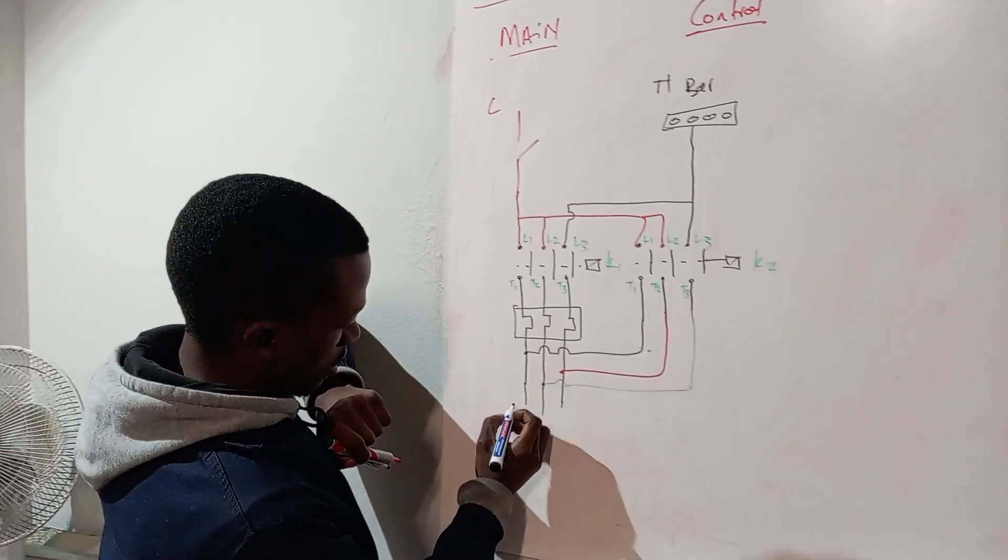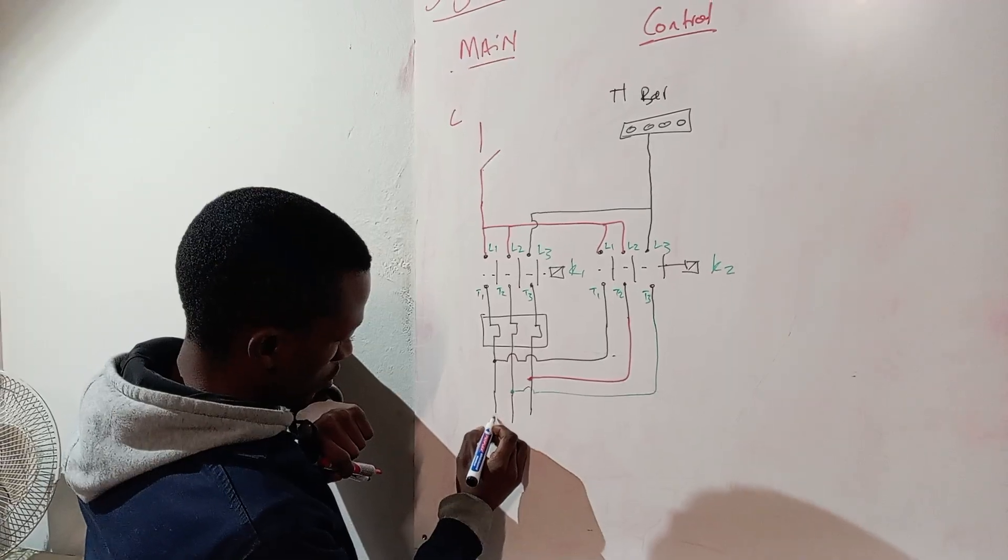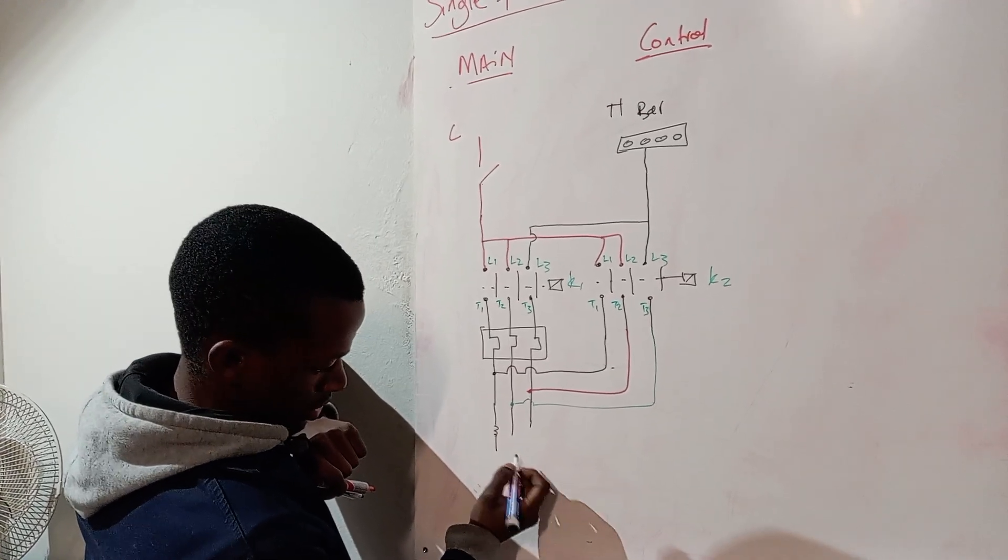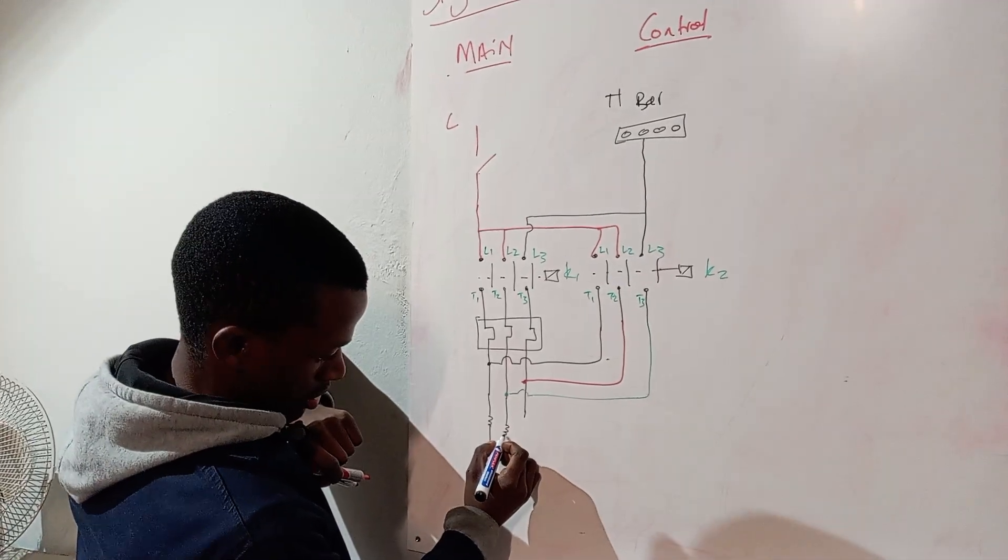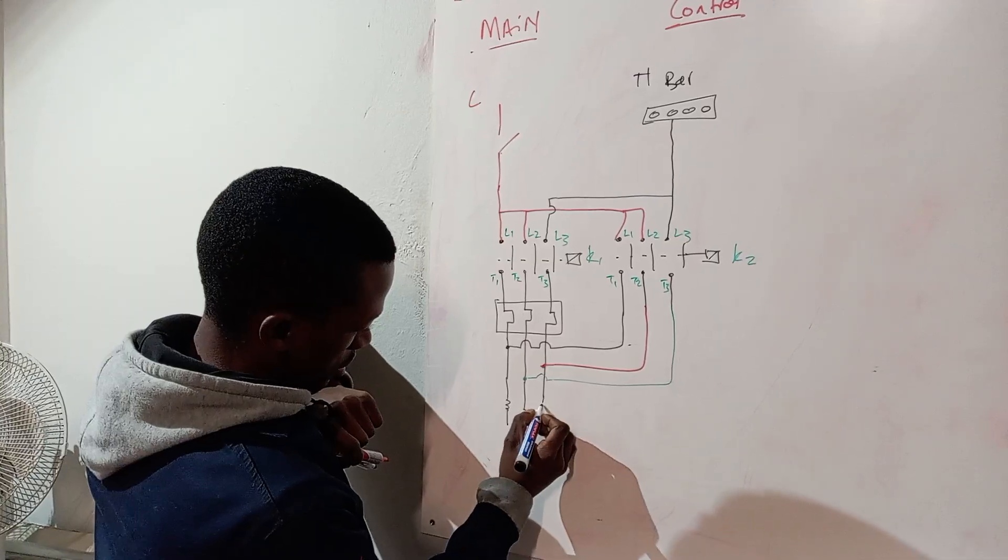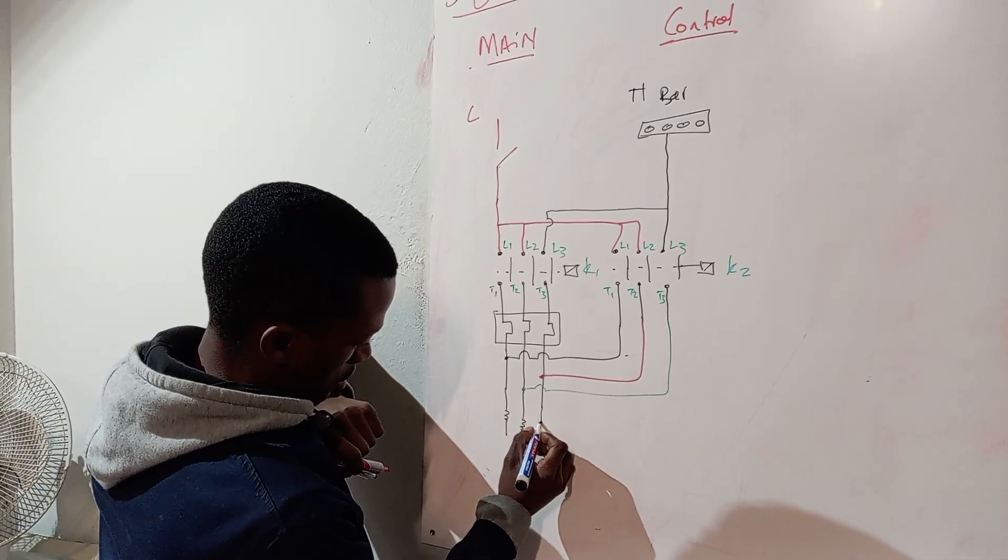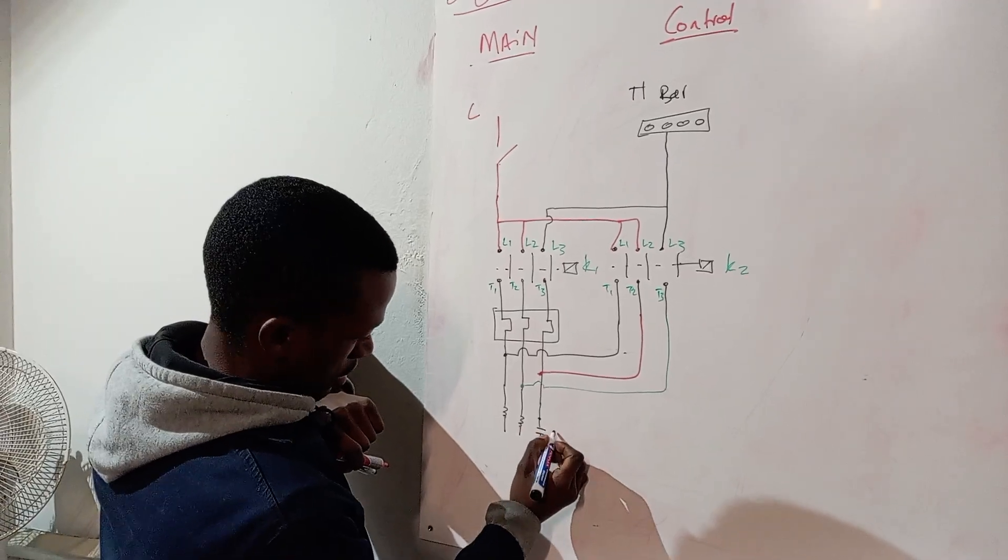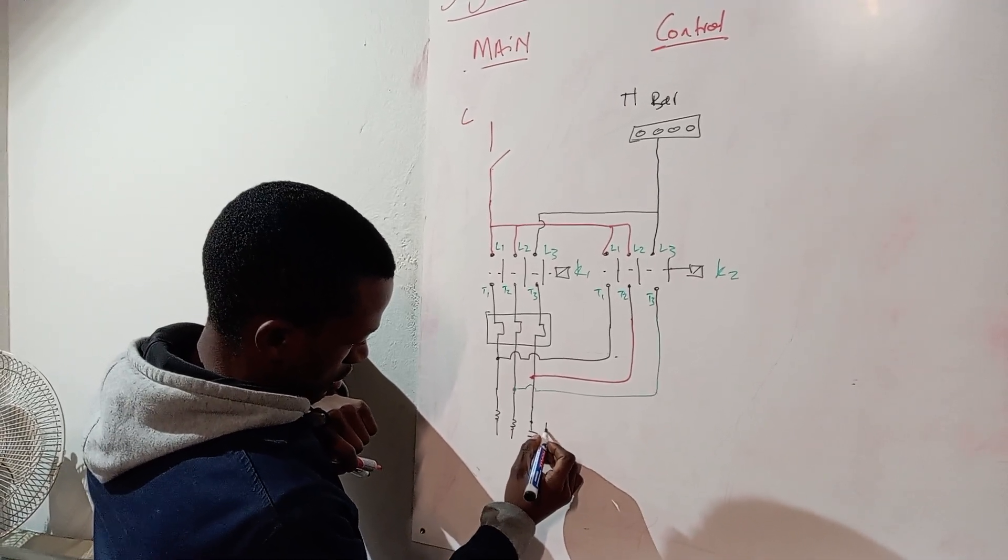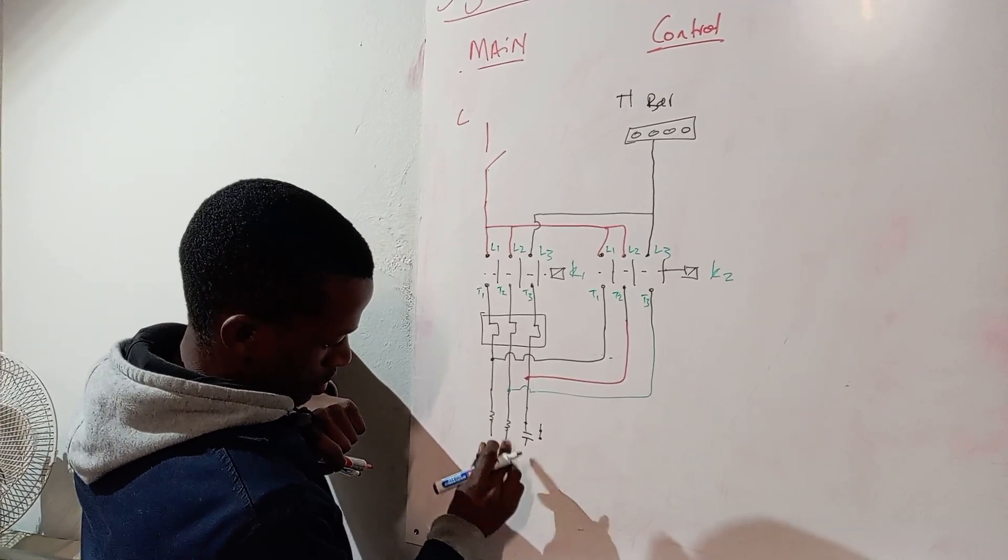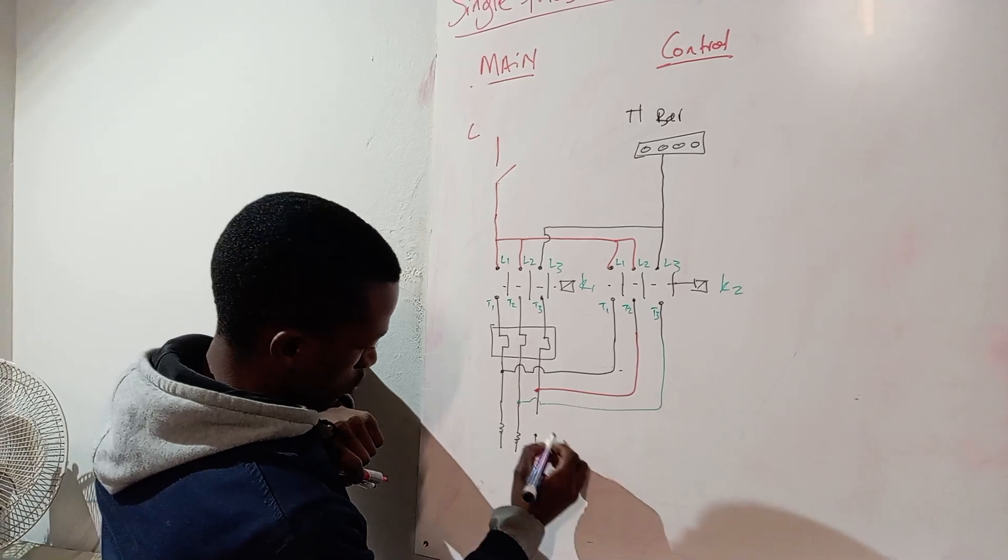And then for this one I'll have to refer here on my book. This will be your running winding and then your start winding. And then this is your capacitor. And then this is your centrifugal switch.